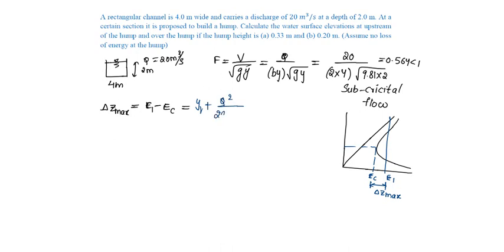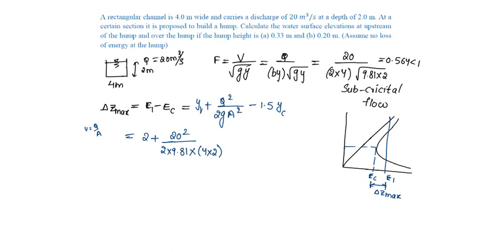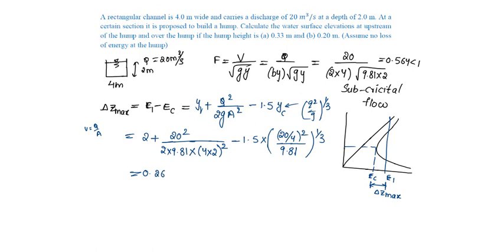E1 = Y1 + Q² / (2g × A²), and EC = 1.5 × YC. Substituting: E1 = 2 + (20²) / (2 × 9.81 × (4 × 2)²), and YC = (q² / g)^(1/3) = ((20/4)² / 9.81)^(1/3). Therefore, ΔZ_max = E1 - EC = 0.2696 meters.